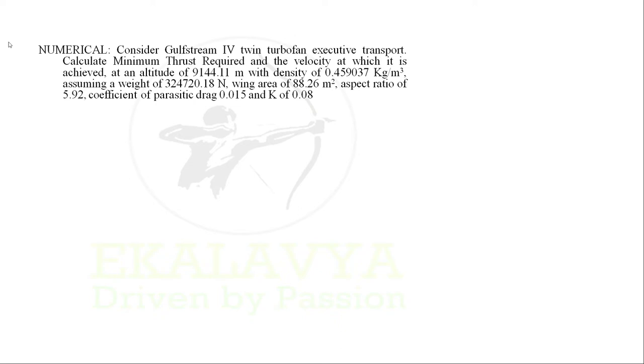I have taken a common numerical from a famous university question paper. The numerical is as follows: consider a Gulfstream 4 twin turbofan executive transport. Calculate the minimum thrust required and the velocity at which it is achieved at an altitude of 9144.11 meters, with density of 0.459037 kg per meter cube, weight of 324720.18 Newton, wing area of 88.26 meter square, aspect ratio of 5.92, coefficient of parasitic drag CD0 of 0.015, and k of 0.08.